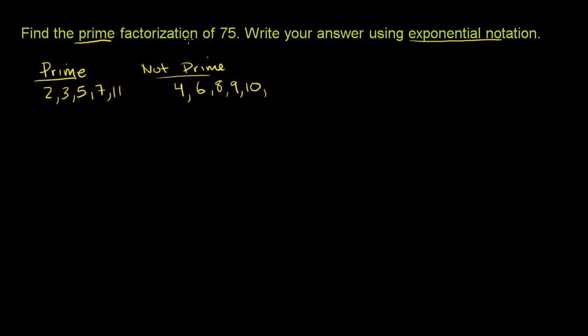a prime factorization is breaking up a number, like 75, into a product of prime numbers. So let's try to do that.